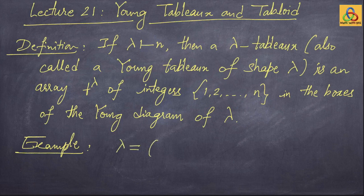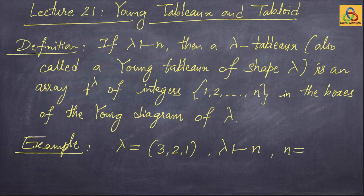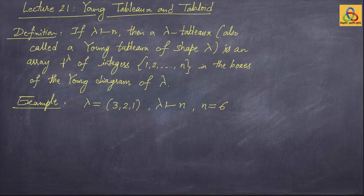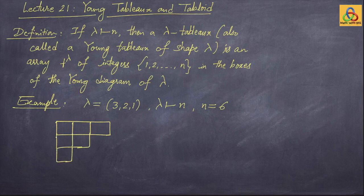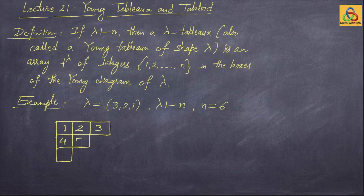Let us see an example. Take the partition λ = (3, 2, 1). Then λ is a partition of n = 6. The Young diagram of shape λ has three boxes in the top row, two boxes in the second row, and one box in the last row. A λ-tableau is just an arrangement of numbers 1 to 6 in these six boxes.